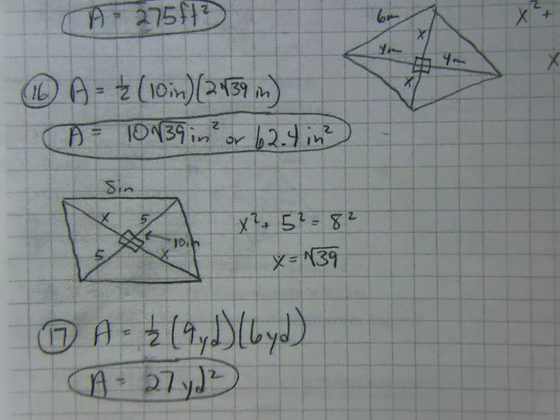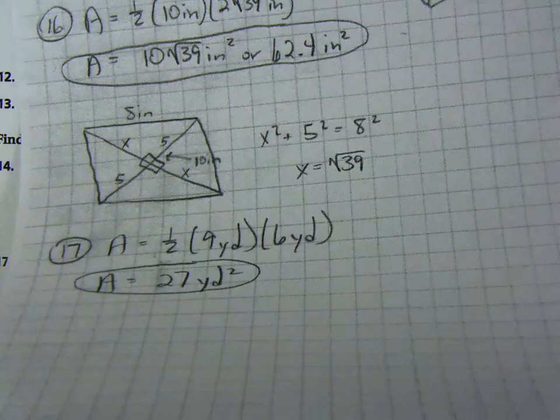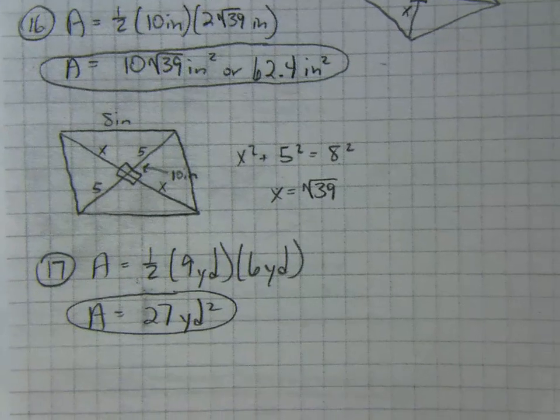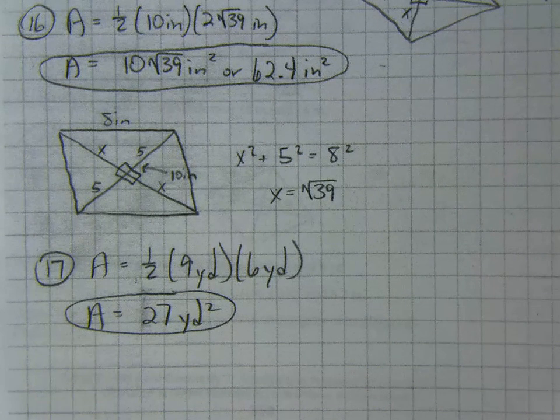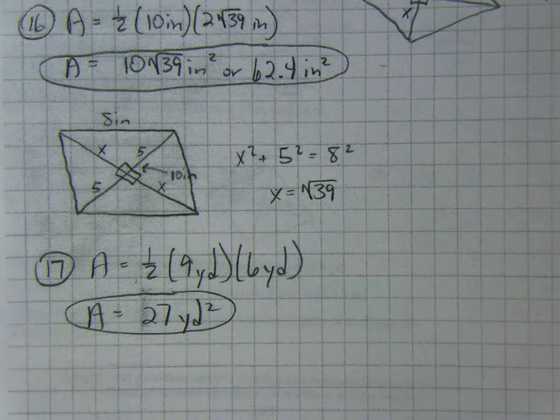And then number 17 was just find the area of the rhombus, and it gave you the two diagonals. So that was a straightforward problem. We didn't have to use anything special there. Just multiply them together and divide by 2.